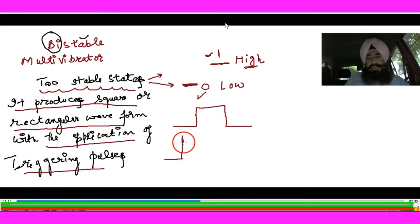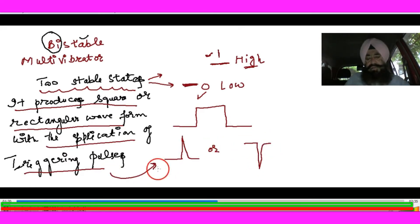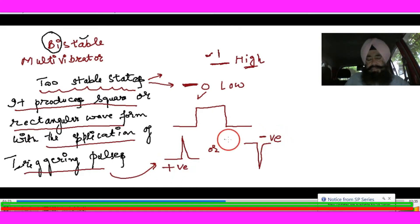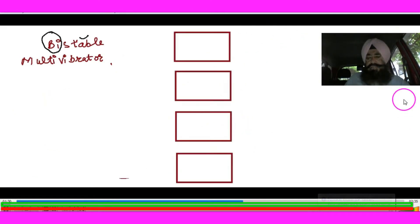This is the positive triggering pulse. We may also have a negative triggering pulse in some cases. So with the application of the triggering pulse, we have the two stable states: zero and one.